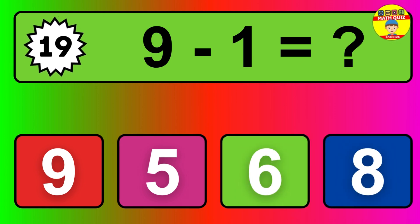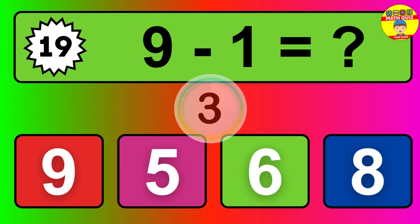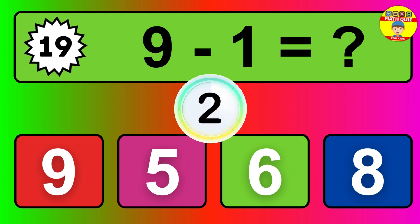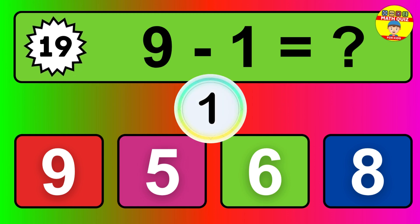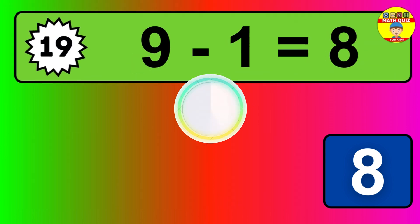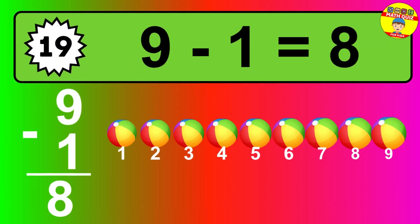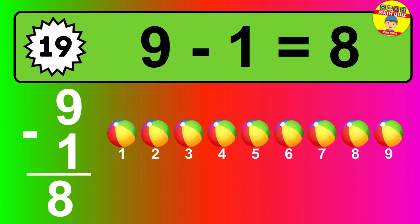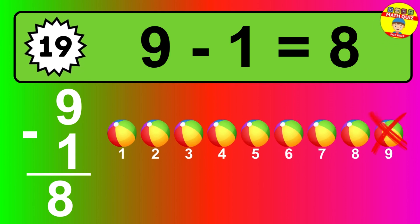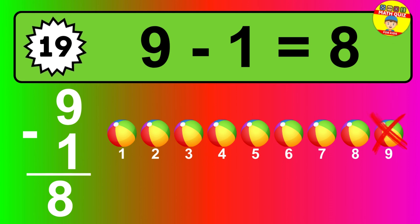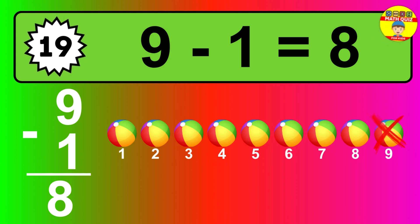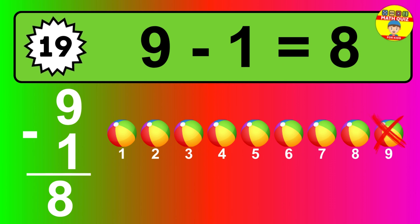Question 19. 9 minus 1 equals what? So the answer is 9 minus 1 is 8. Let's count it: 1, 2, 3, 4, 5, 6, 7, 8.